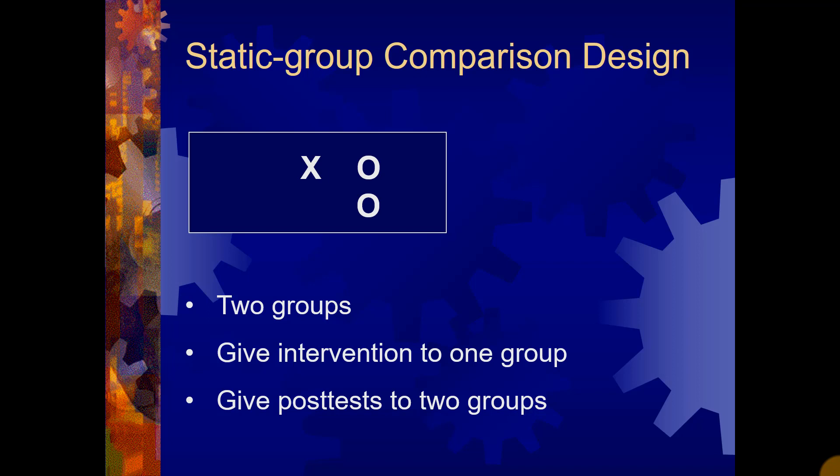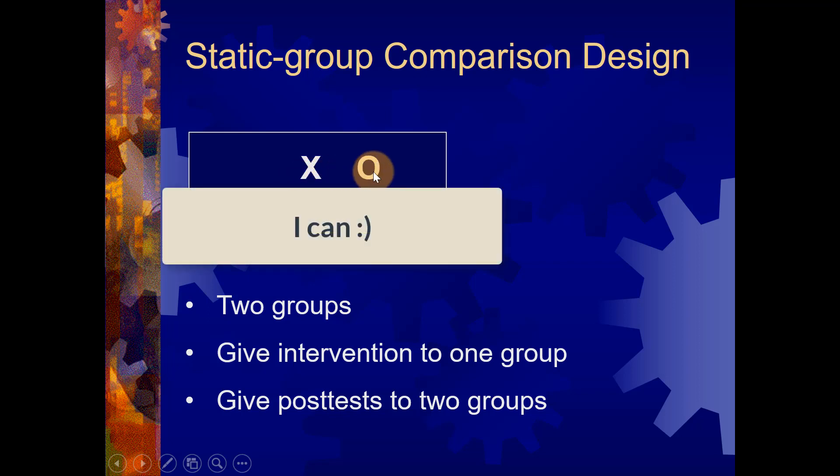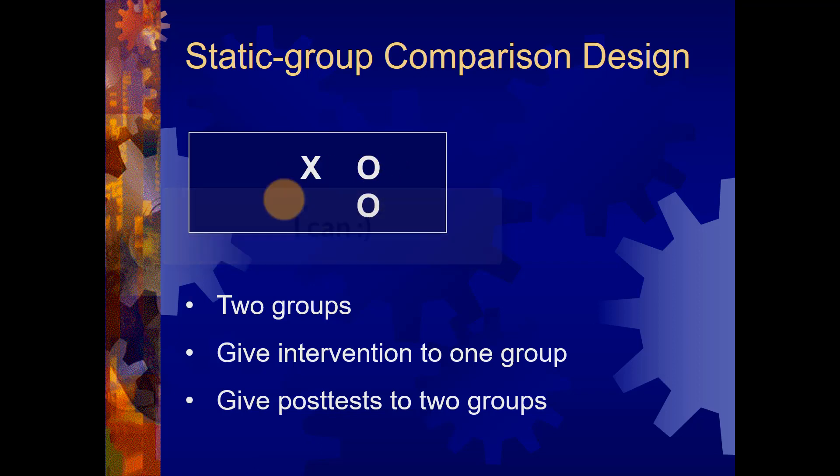So why might one do this? If we just look at this first row, just pretend this isn't here. Maybe I can put something over it. We have the intervention and the observation, so this just by itself is the one-shot case study that we went over before. Now why add this other group with just a post-test?